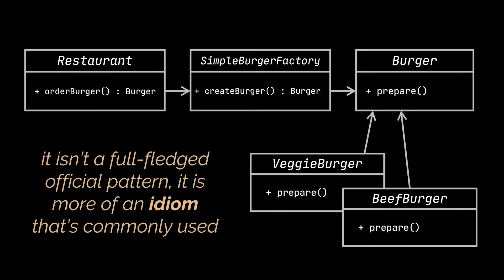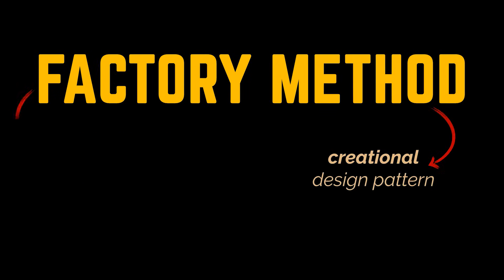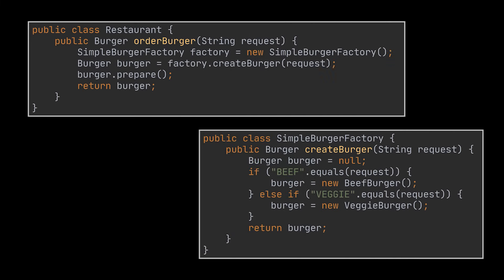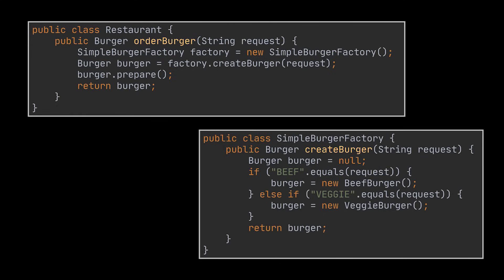However, it is the first step in understanding one of the most powerful design patterns out there: the factory method design pattern. This pattern is a creational design pattern. It loosens the coupling of a given code by separating the product's construction code from the code that uses this product. In our previous example, the product was the burgers we are delivering. So let us go back to this example to try and see together why the implementation we did isn't considered a full-fledged design pattern. When we encapsulated the creation logic of our burger in the simple factory class, we isolated this logic and created a class whose sole purpose is creating burger objects. By doing this, we followed the single responsibility principle and that's great.